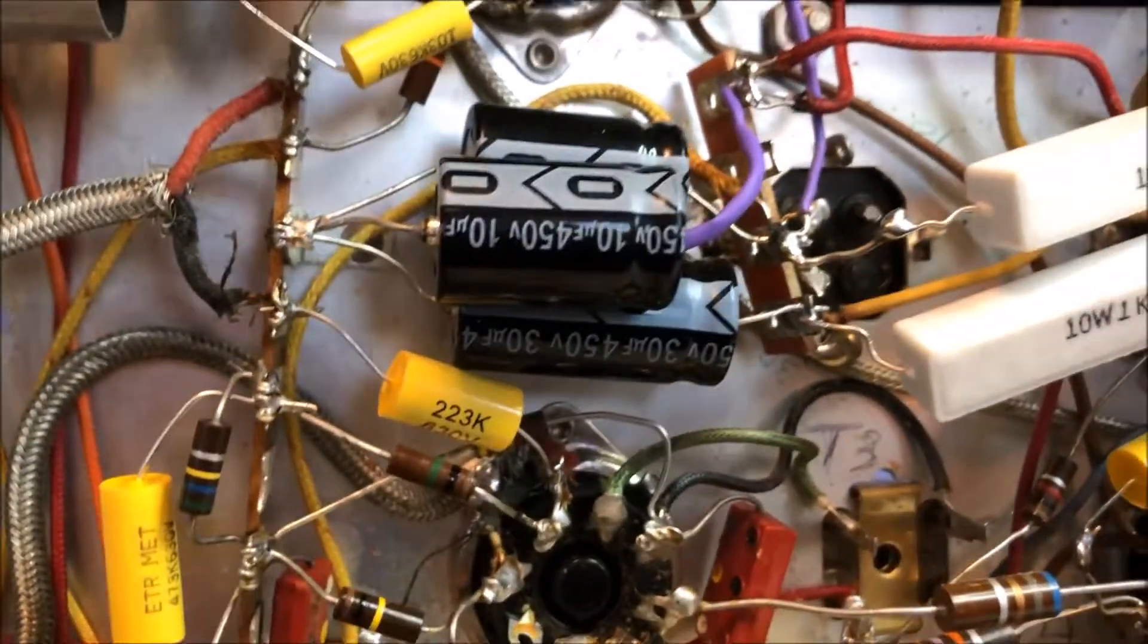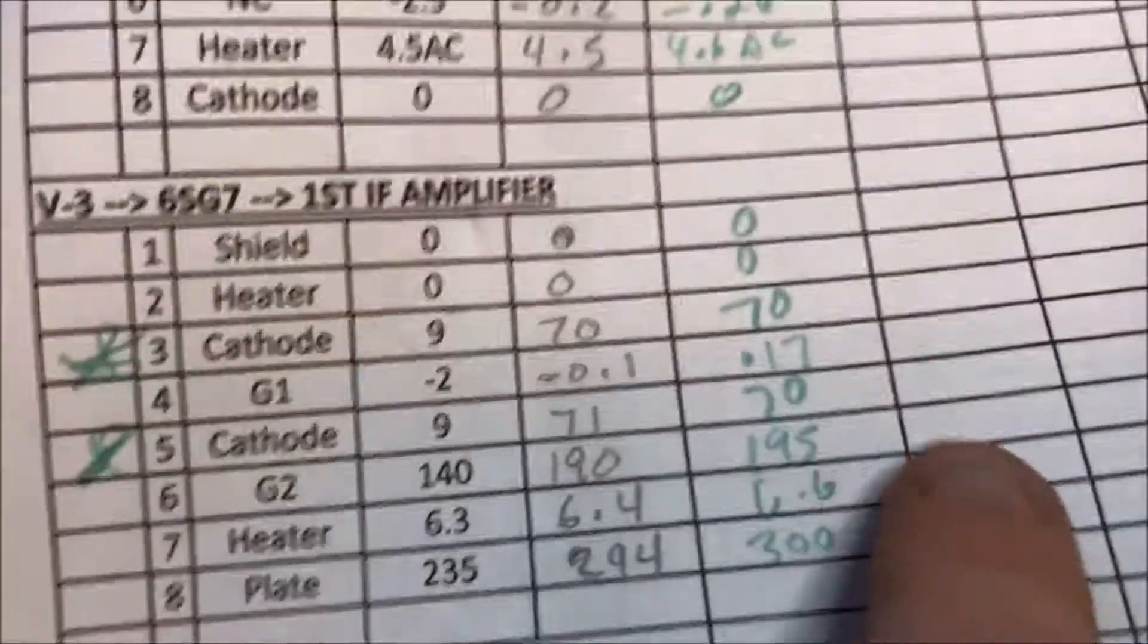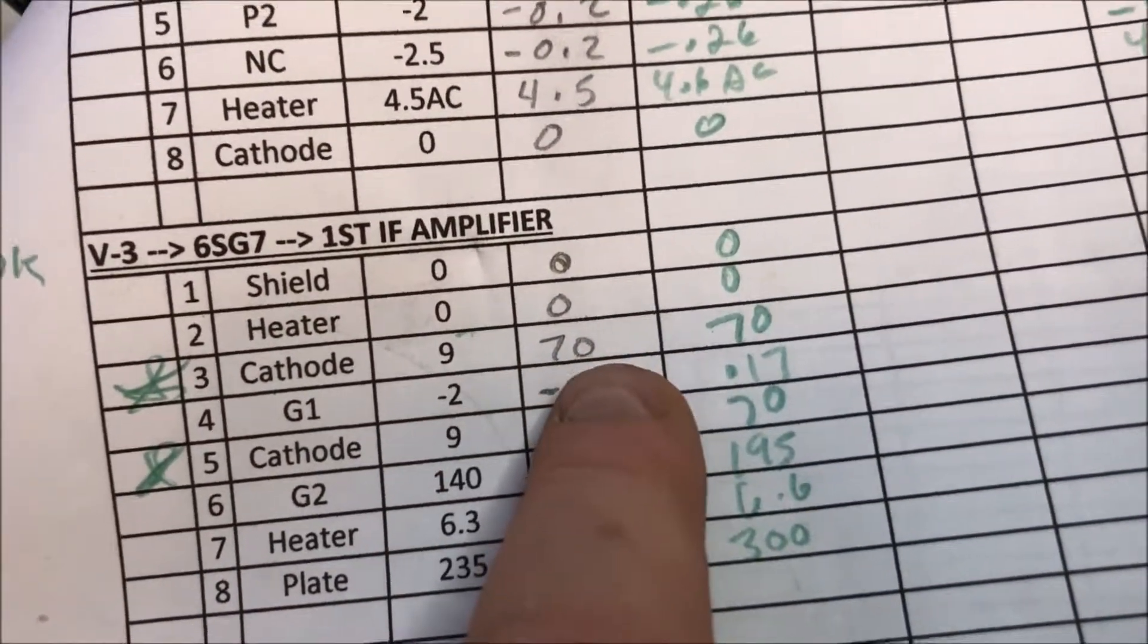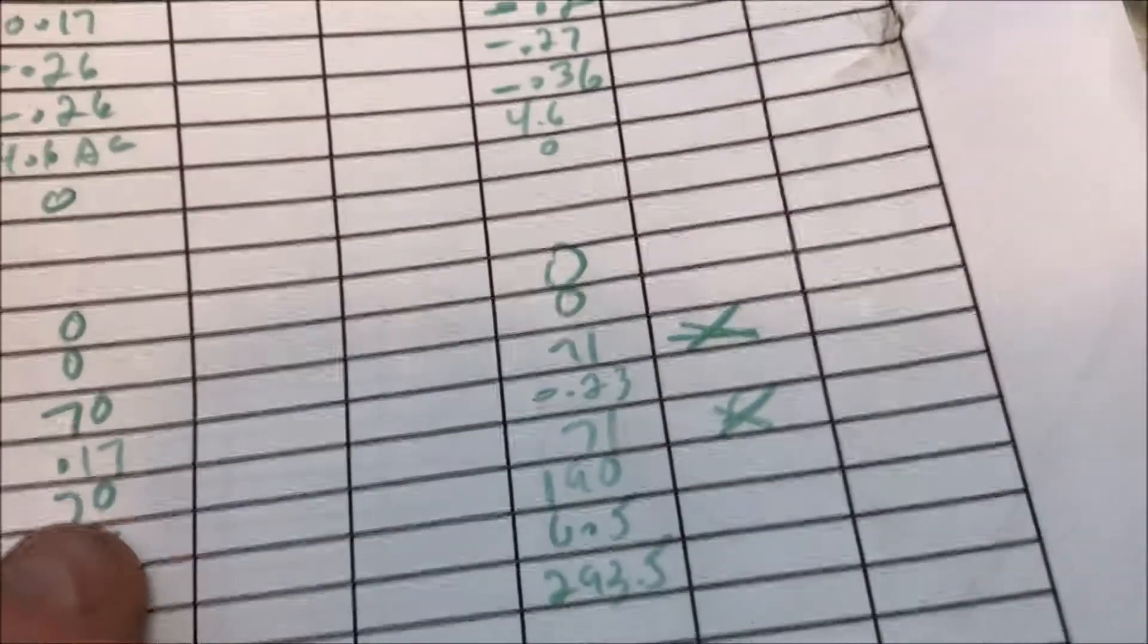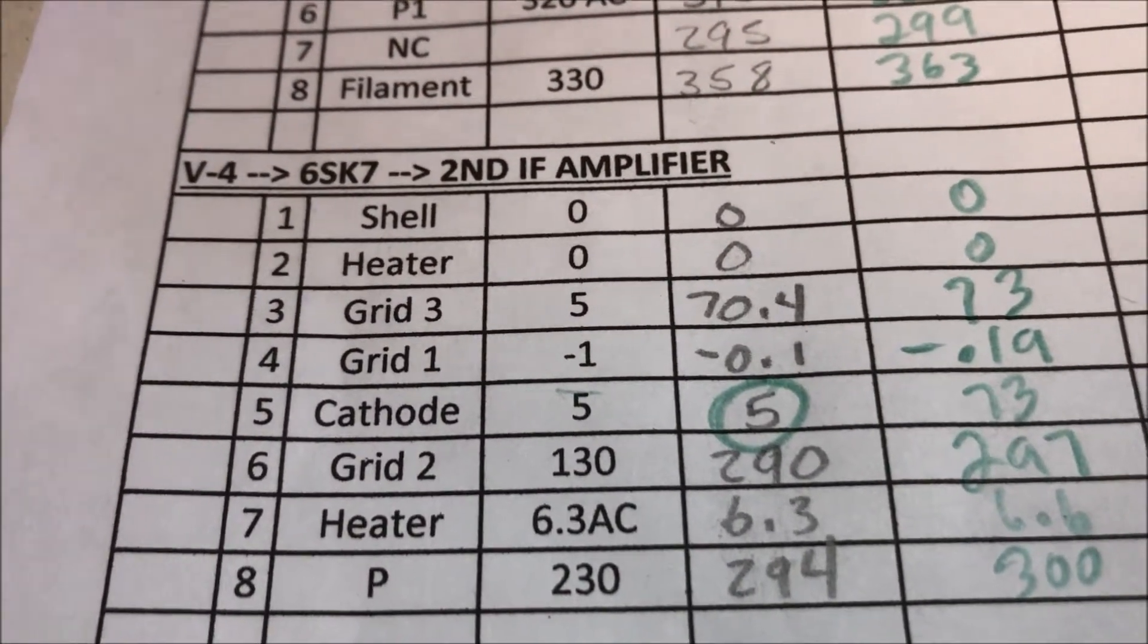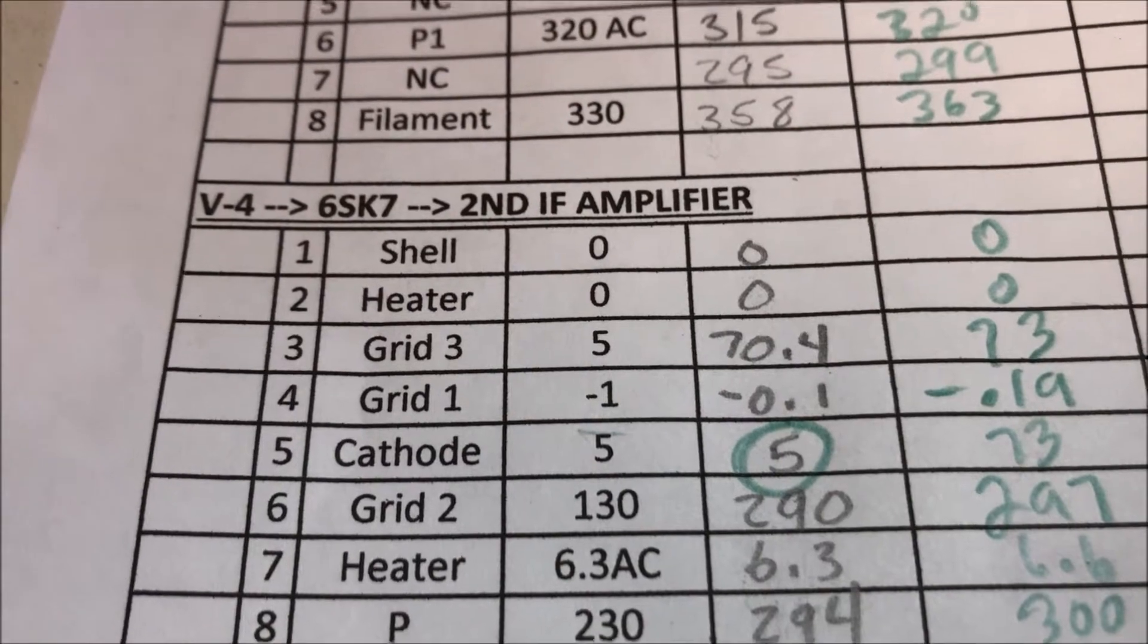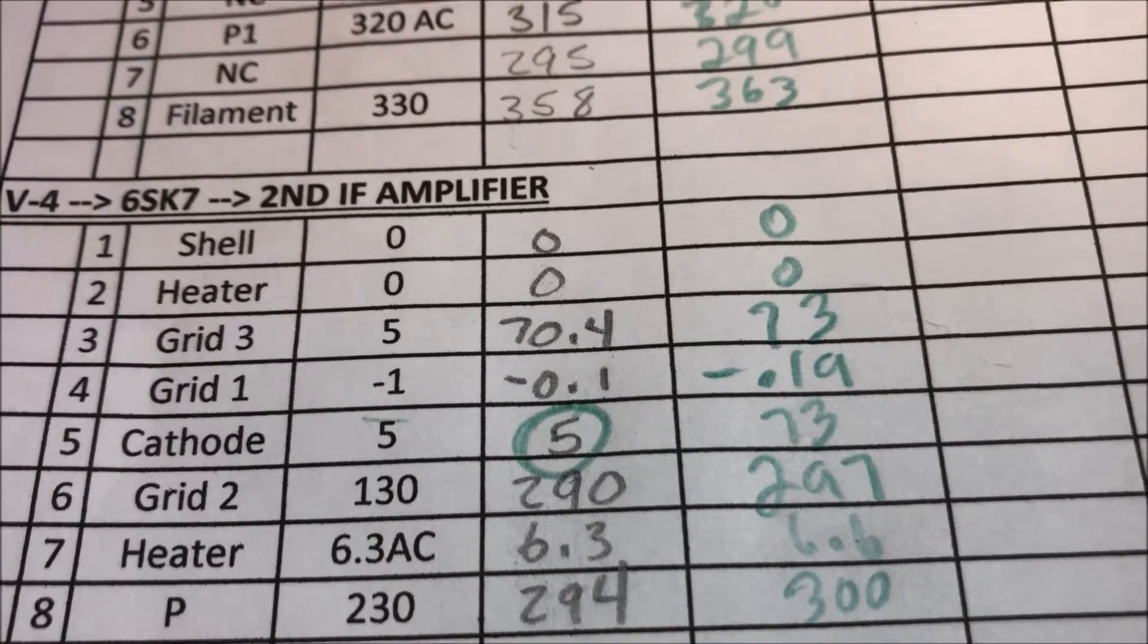I replaced the filter caps with brand new ones, and unfortunately, I'm still getting weird voltages. My first IF amp, I'm supposed to be getting like 9 volts here, I'm getting 70. On this one, pin 5, I'm supposed to get 9 volts, I'm getting 71. Nothing's changed. On this one here, I'm supposed to be getting 5 volts on pins 3 and 5, and I'm getting like 70.4, 73, 73.